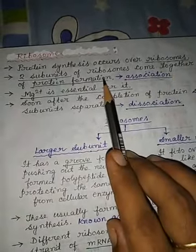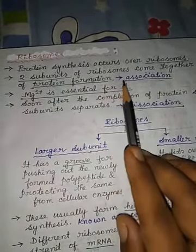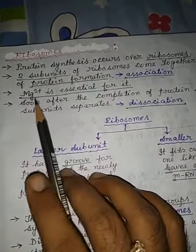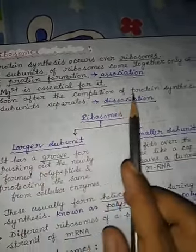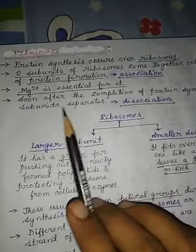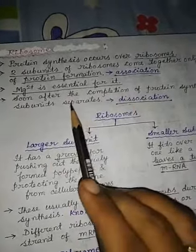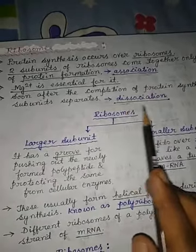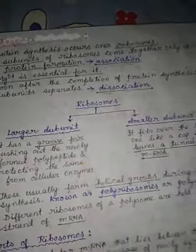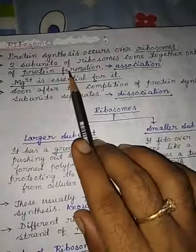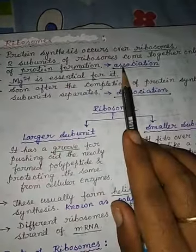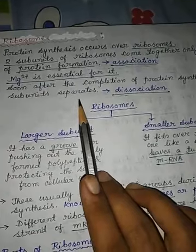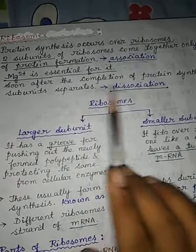For the association of the two subunits of the ribosome, the presence of magnesium ions is necessary. When protein synthesis — meaning translation — is complete, the two subunits of the ribosome become separated again. This is called dissociation. When the two subunits combine, it is called association; when they disassociate, it is called dissociation.